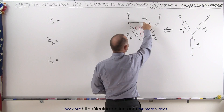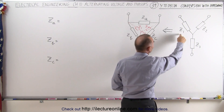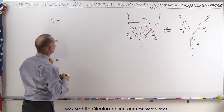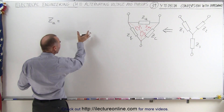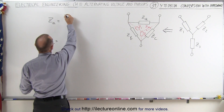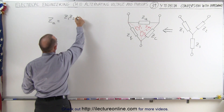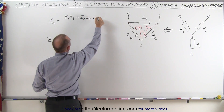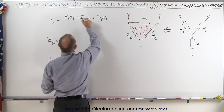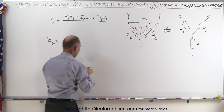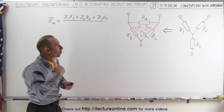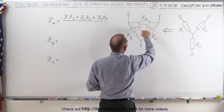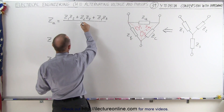we want to be able to find ZA, ZB, and ZC in terms of Z1, Z2, and Z3. The way that's done is as follows. To find ZA, that is equal to the product of every combination of Z1 and Z2. So we get Z1 times Z2, plus Z2 times Z3, plus Z1 times Z3. And we're going to divide that by the impedance that's directly across from what we're trying to find. So since we're trying to find ZA, the one directly across would be Z3, and that goes on the denominator.